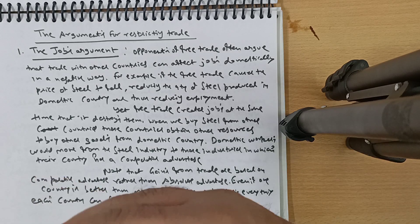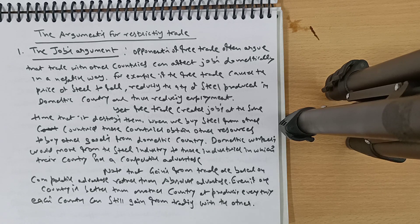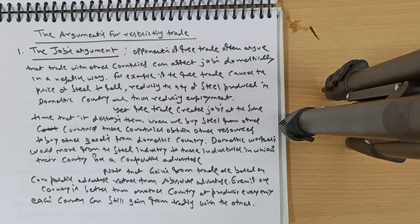Now let's look at arguments against free trade and their counter-arguments. The jobs argument: opponents of free trade often argue that trade can harm domestic jobs. If free trade causes the price of steel to fall, it reduces quantity of steel produced domestically, thus reducing employment in the steel sector.